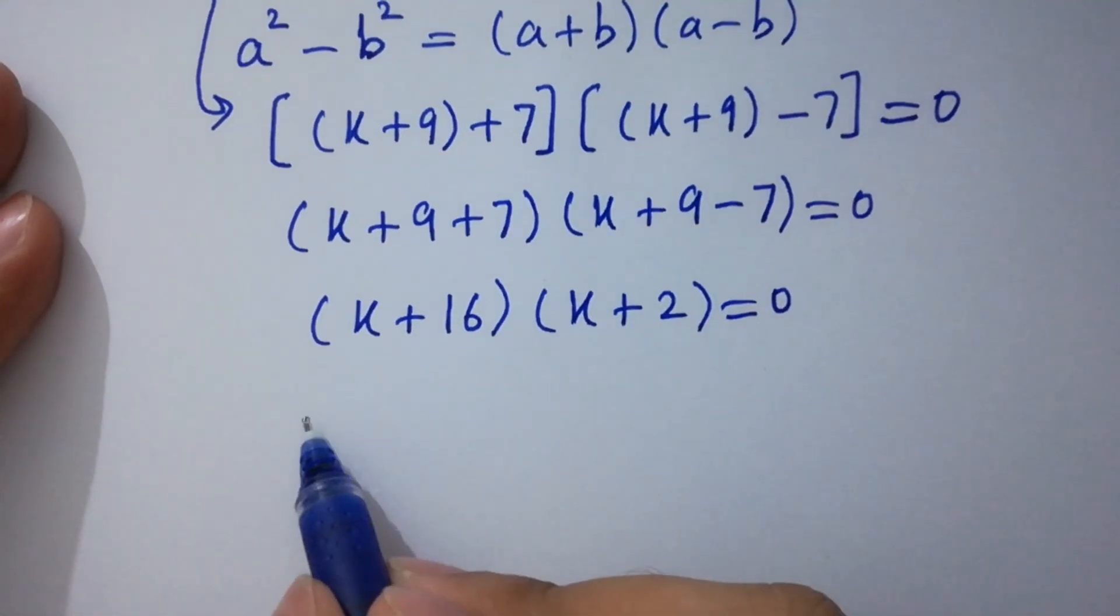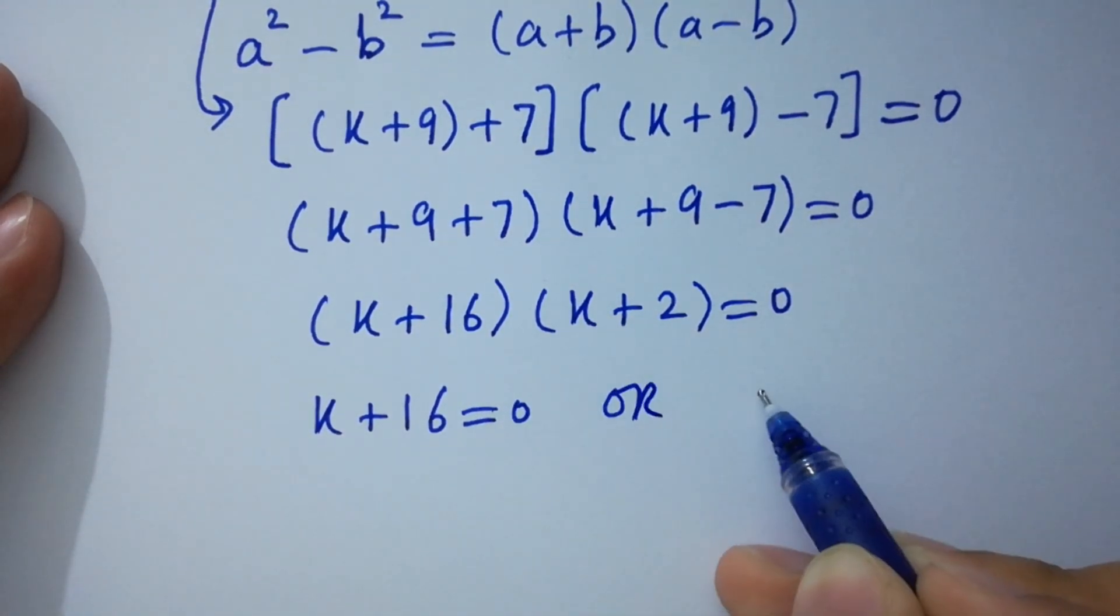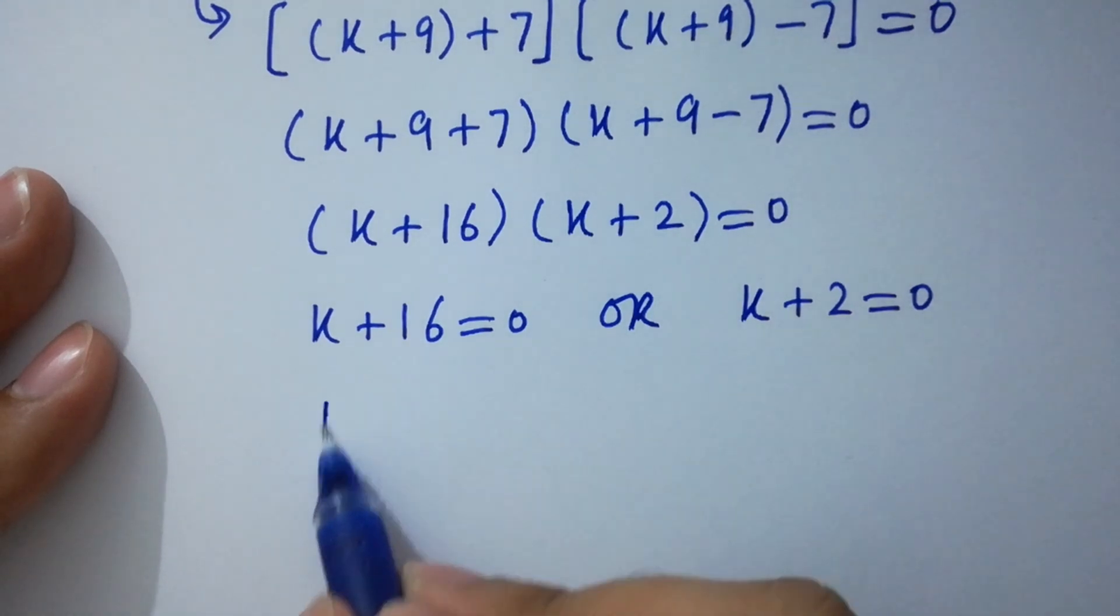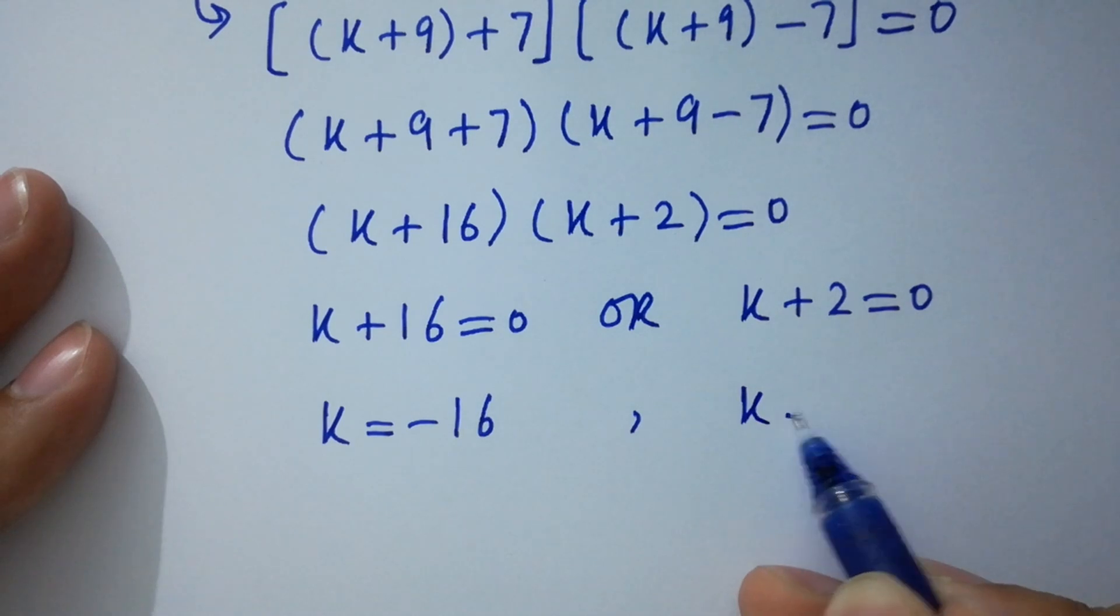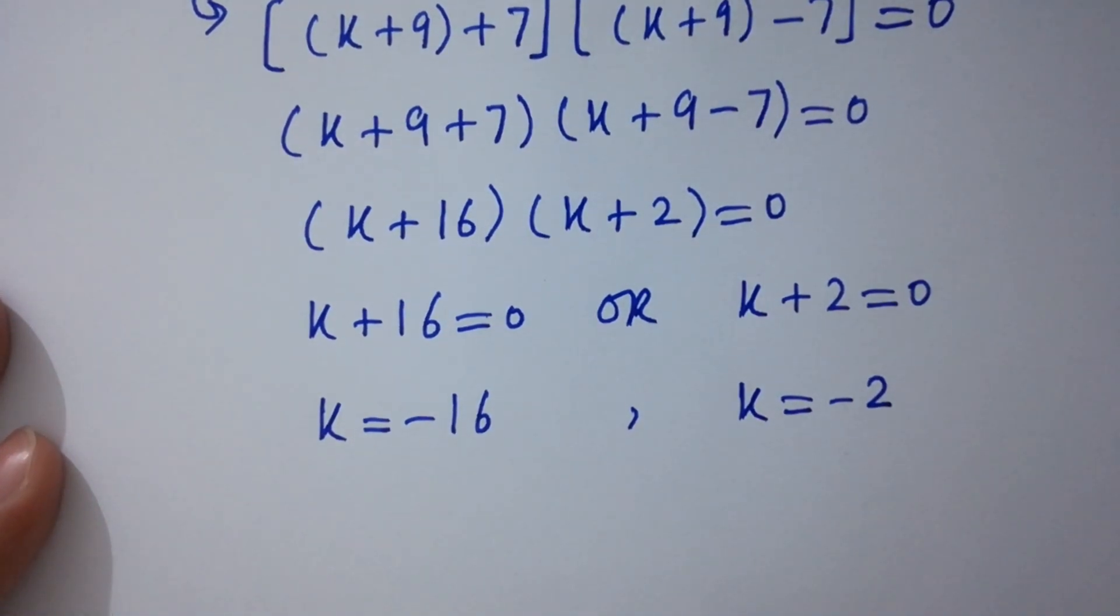So either k + 16 = 0 or k + 2 = 0. We get k = -16 and here we get k = -2, which are values of k.